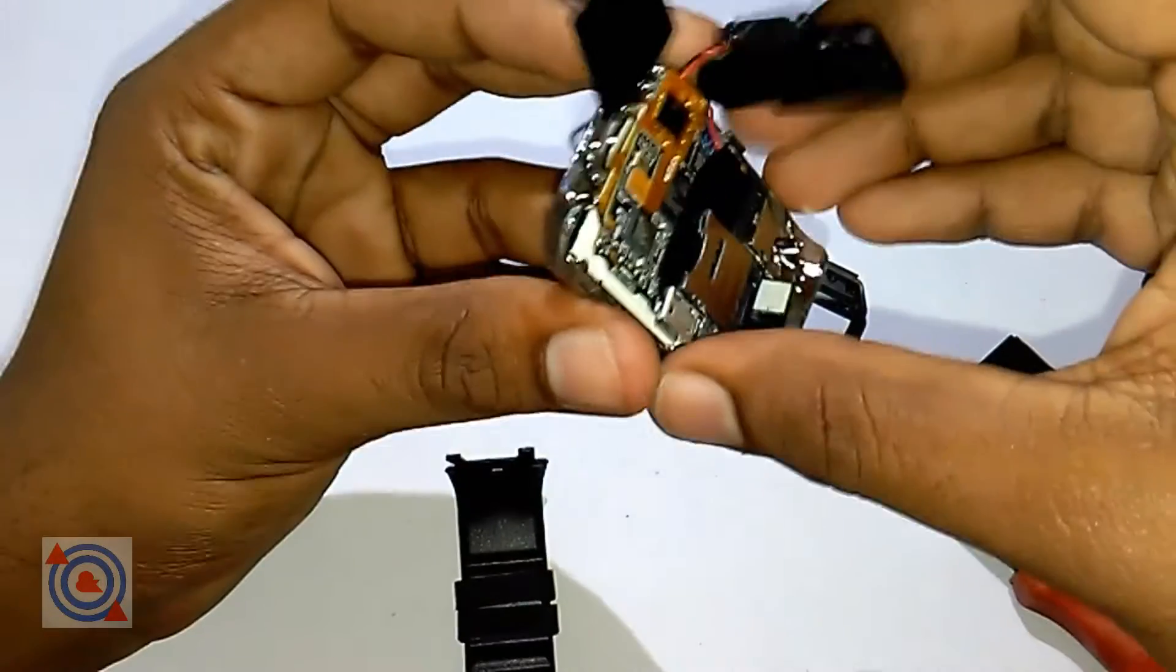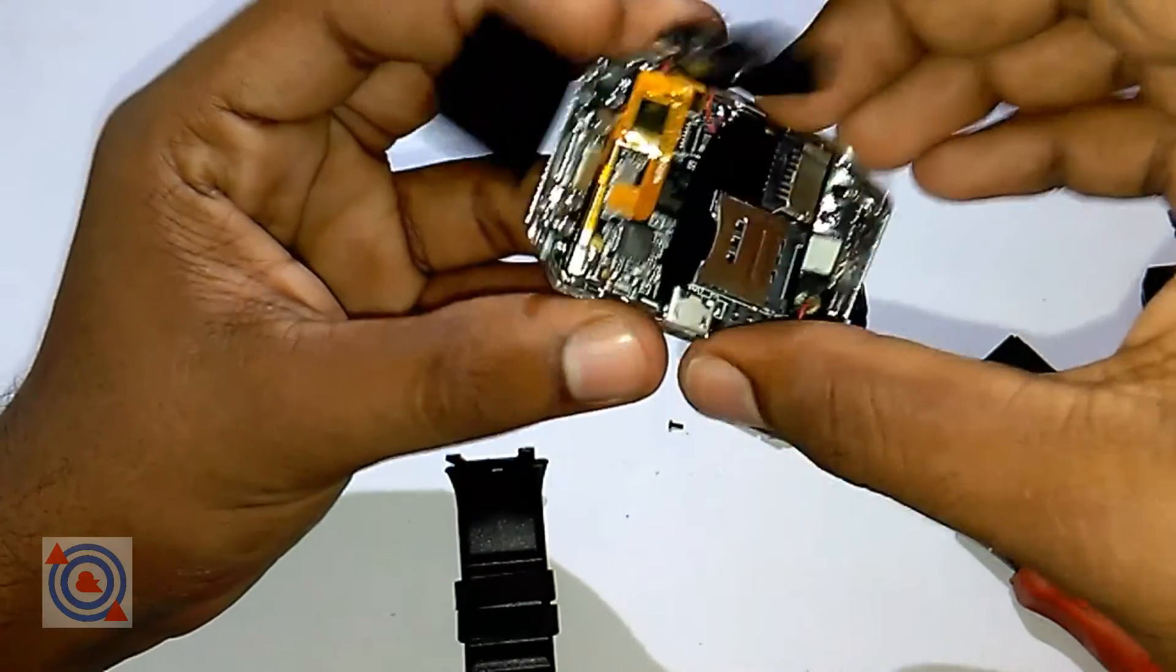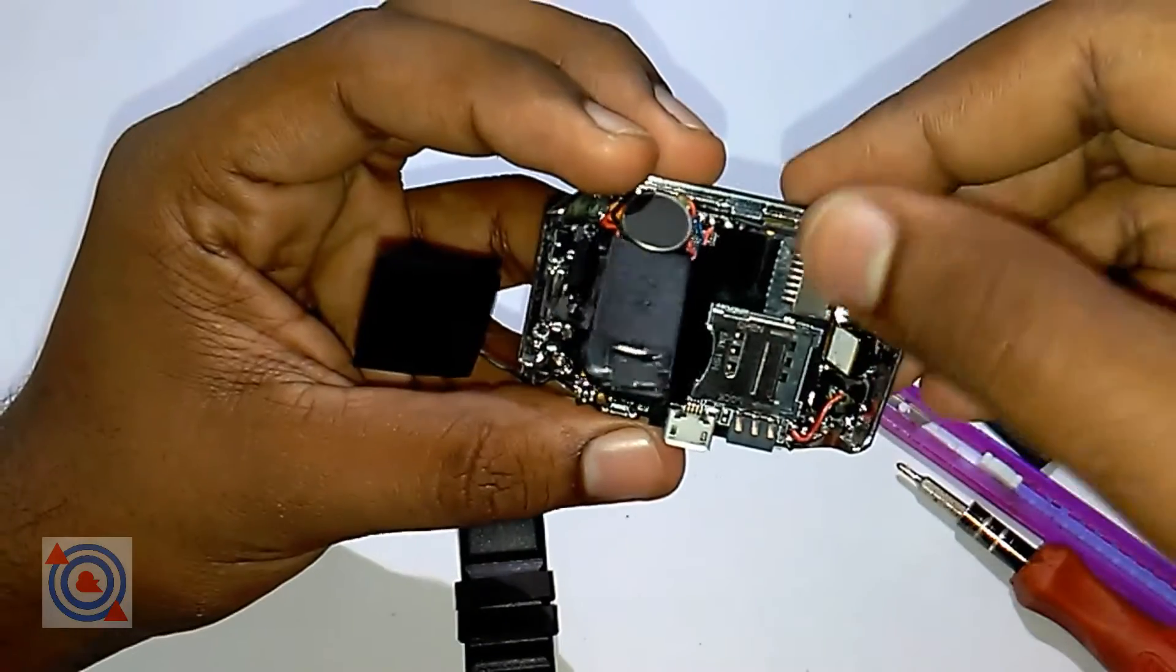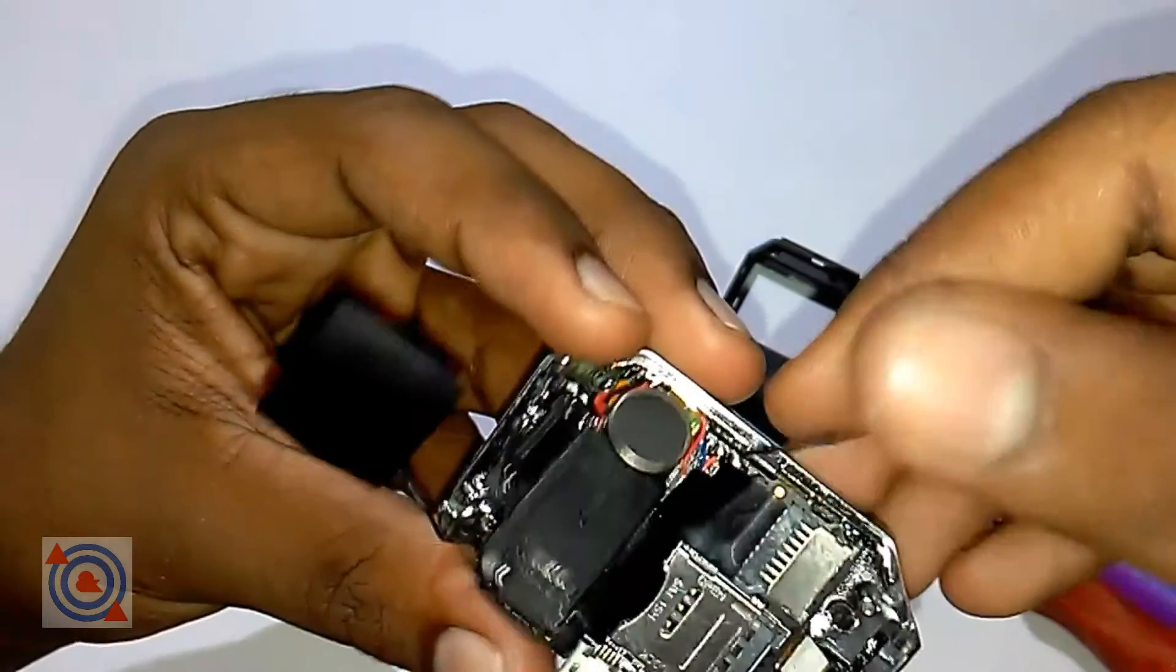Looking inside, it's very compact. And that wire is actually the antenna wire for the SIM.